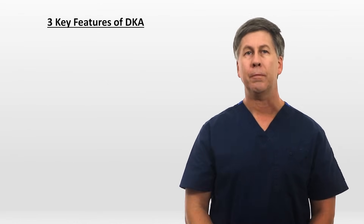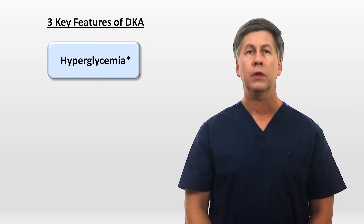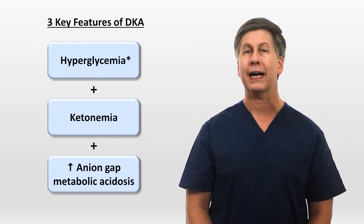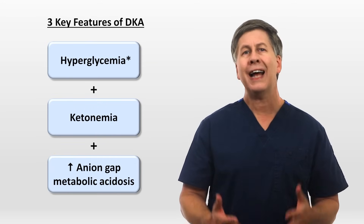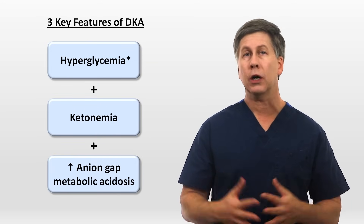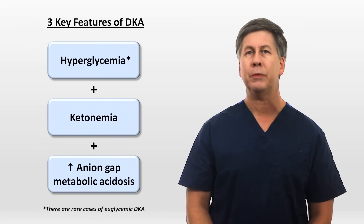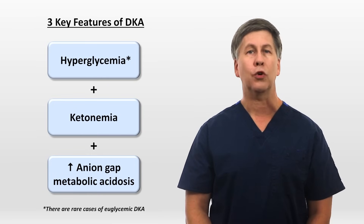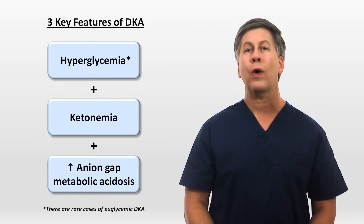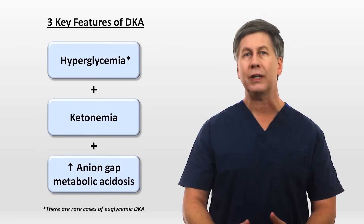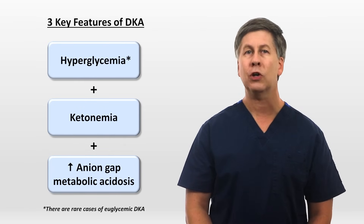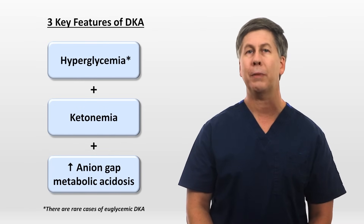There are three key features of DKA: hyperglycemia, compounds called ketone bodies in the blood — a state known as ketonemia — and an elevated anion gap metabolic acidosis. There's an asterisk next to the hyperglycemia because there are cases of euglycemic DKA in which the blood sugar is either normal or near normal.